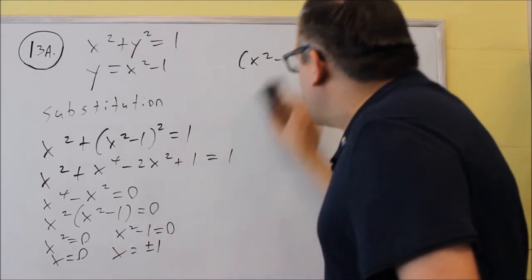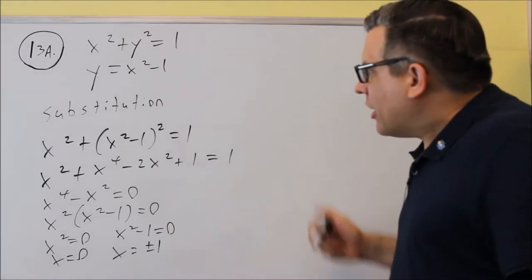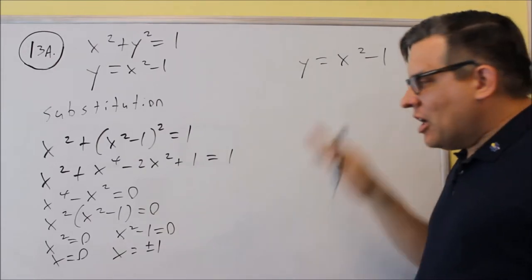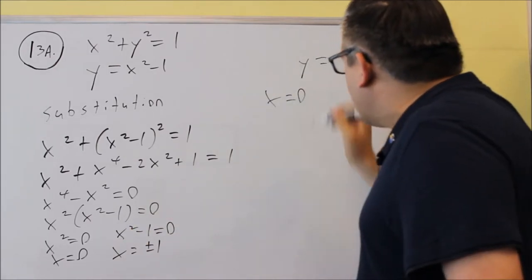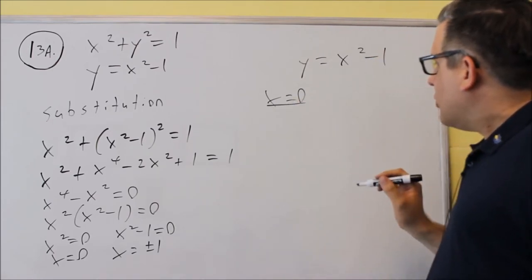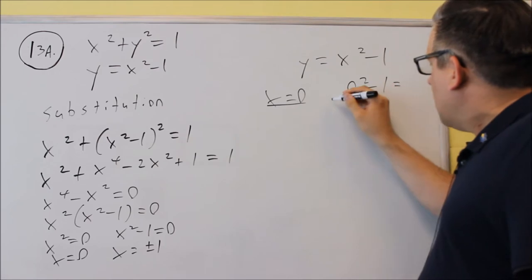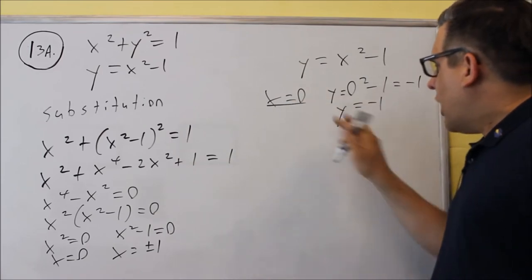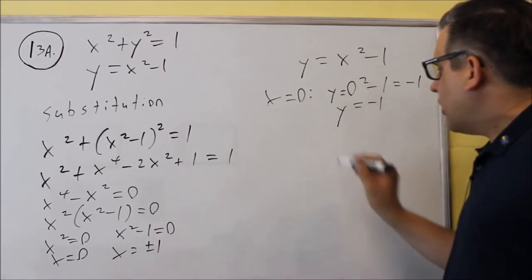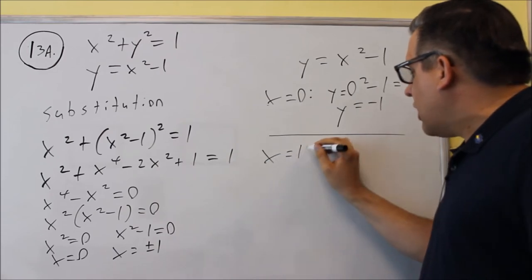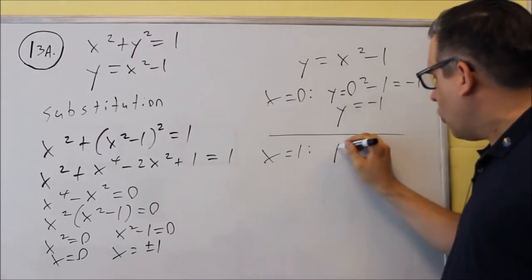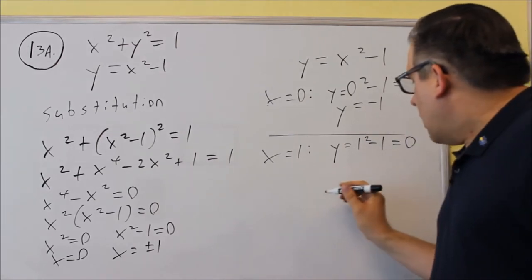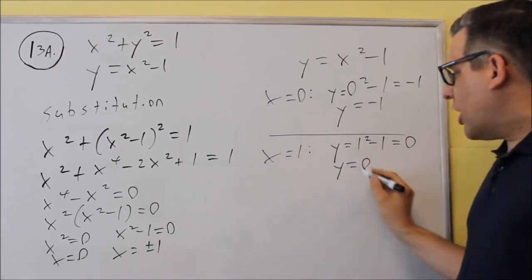Now that we have the x values, we need to find the corresponding y values. Since they already give us y equals x squared minus 1, we plug each x value in. For x equals zero: y equals zero squared minus 1 equals negative 1. For x equals 1: y equals 1 squared minus 1 equals zero. So when x is 1, y is zero.